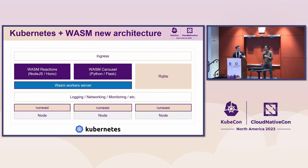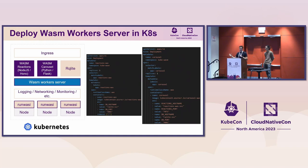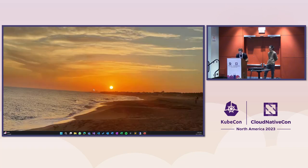Now let's migrate the initial application from Linux containers to WebAssembly modules. The architecture is the same, but now we have Wasm Worker Server with two WebAssembly modules and the same database. In the Kubernetes deployment YAML, you can see two things: first, the runtime class name is set to WWS — Wasm Worker Server — telling Kubernetes to run this container with the specific shim that contains Wasm Worker Server. Second, the images are much smaller — it's just the reactions-at-WWS Wasm Worker Server container.